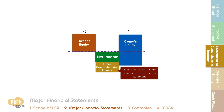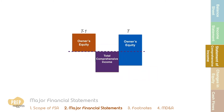The sum of net income and other comprehensive income is referred to as total comprehensive income. Firms can choose to report a combined statement of comprehensive income or as two separate statements.